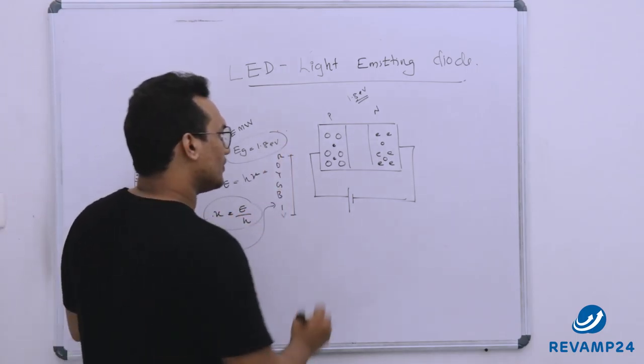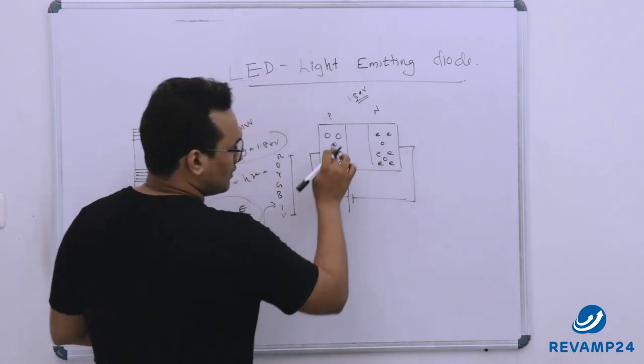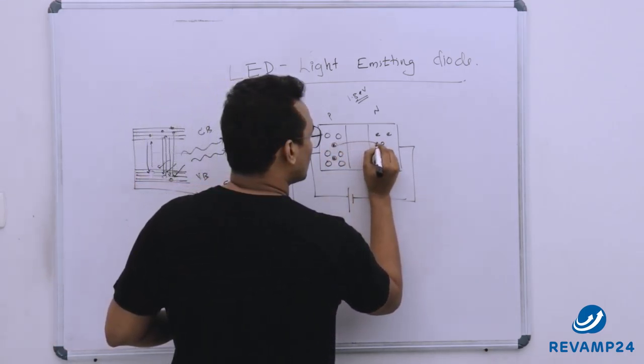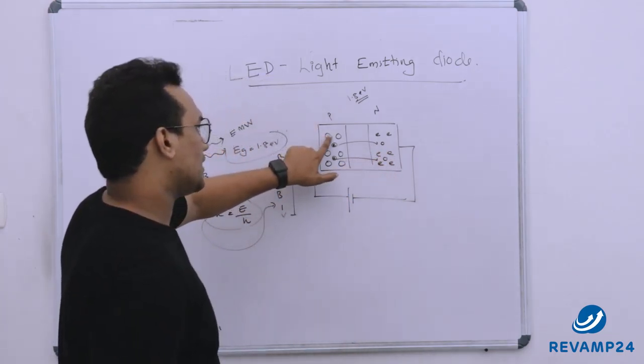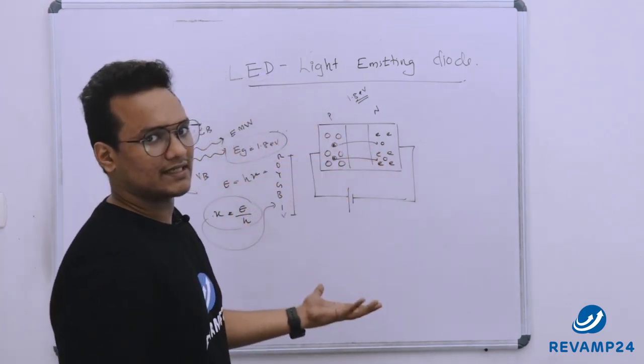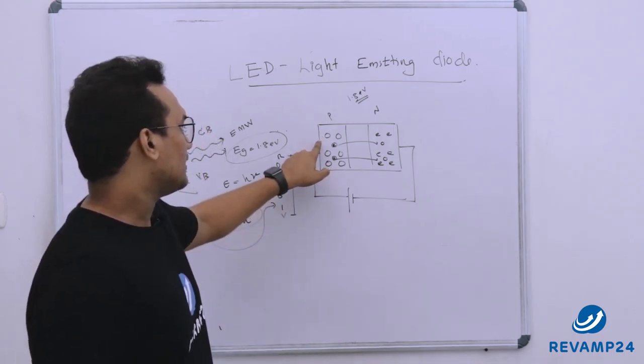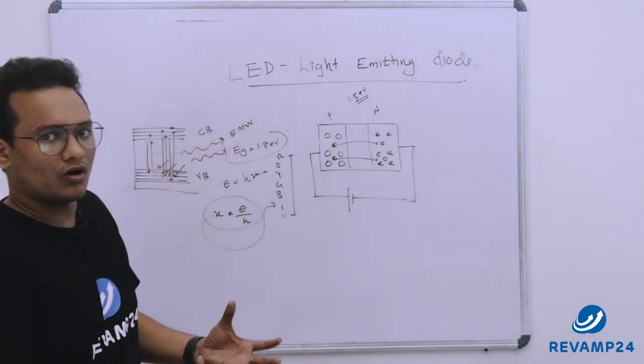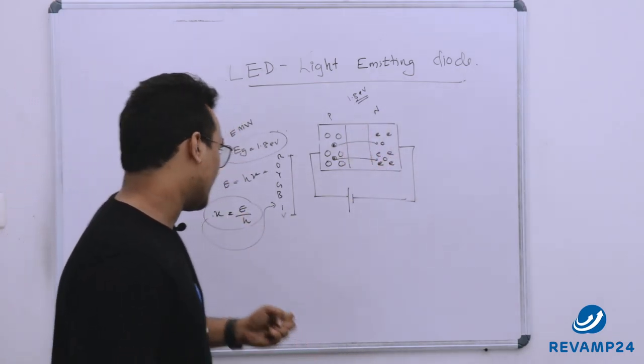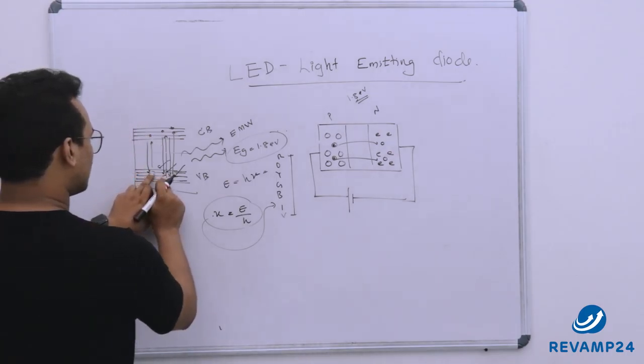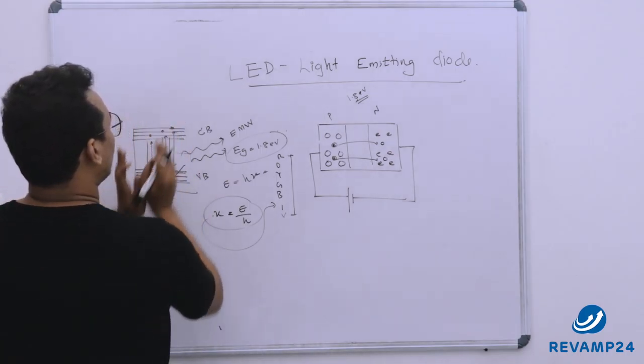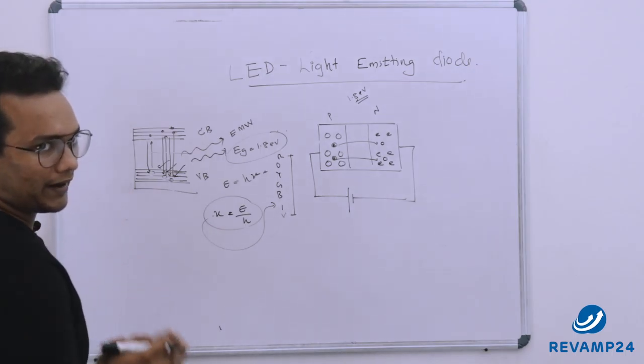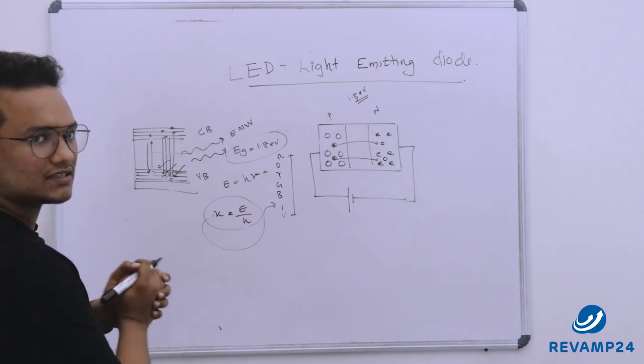Okay for that we need these electrons the minority charge carriers to recombine with holes. See this majority charge carriers how these are generated you know due to trivalency here and due to pentavalency here. So these are not thermally generated. See the electrons which are jumped from the valence band to conduction band. These are thermally generated electron hole pairs or thermally generated charge carriers.